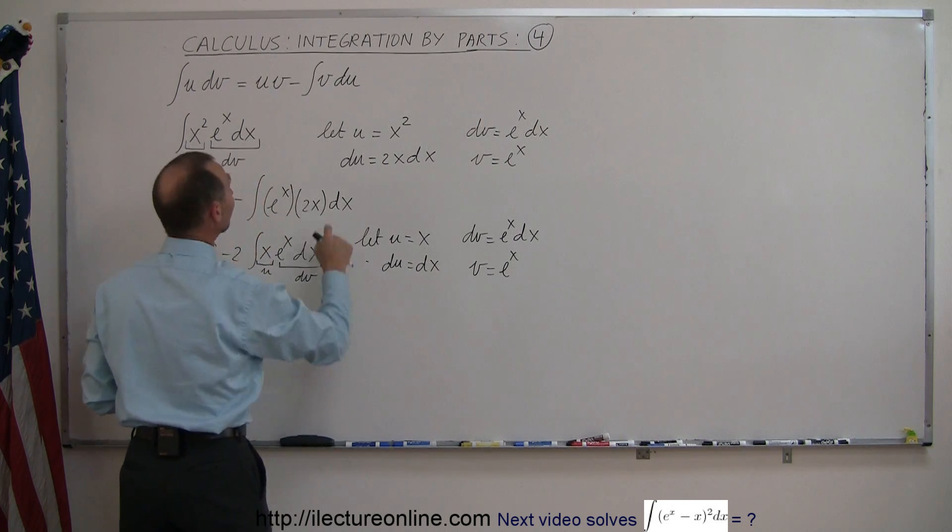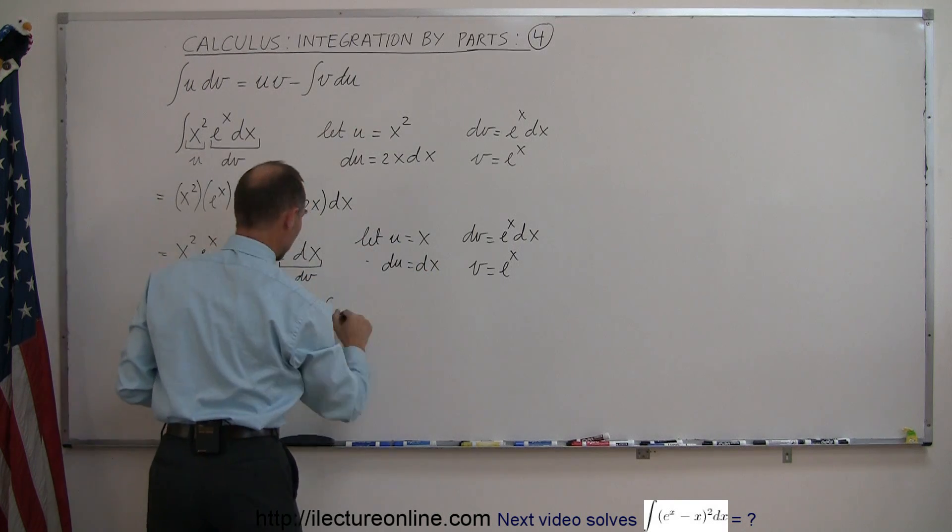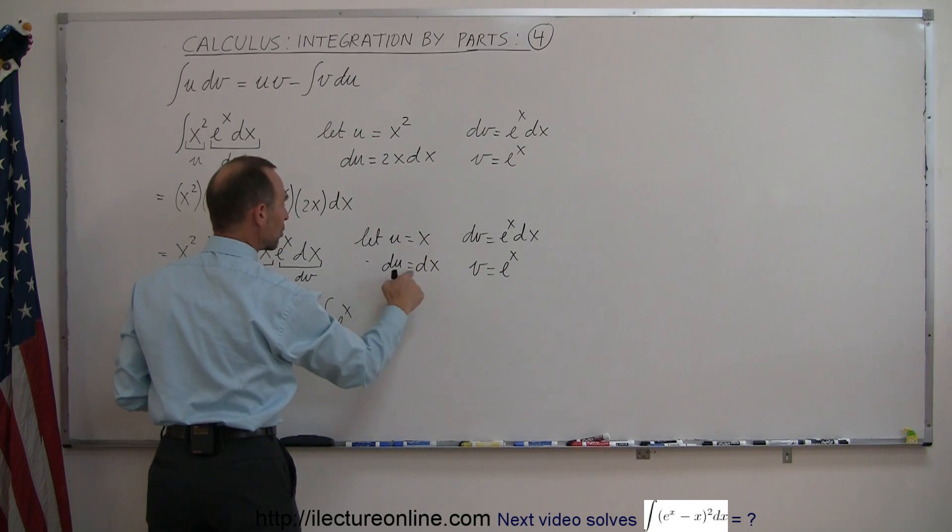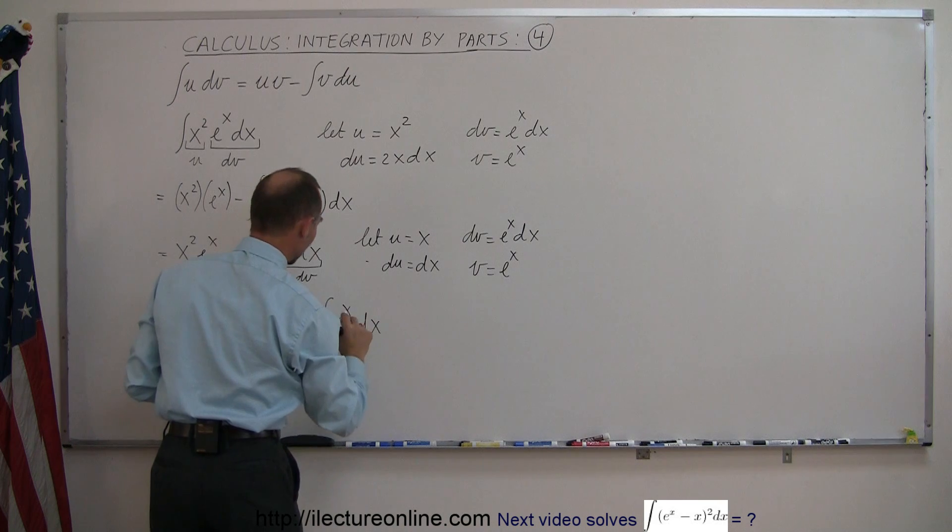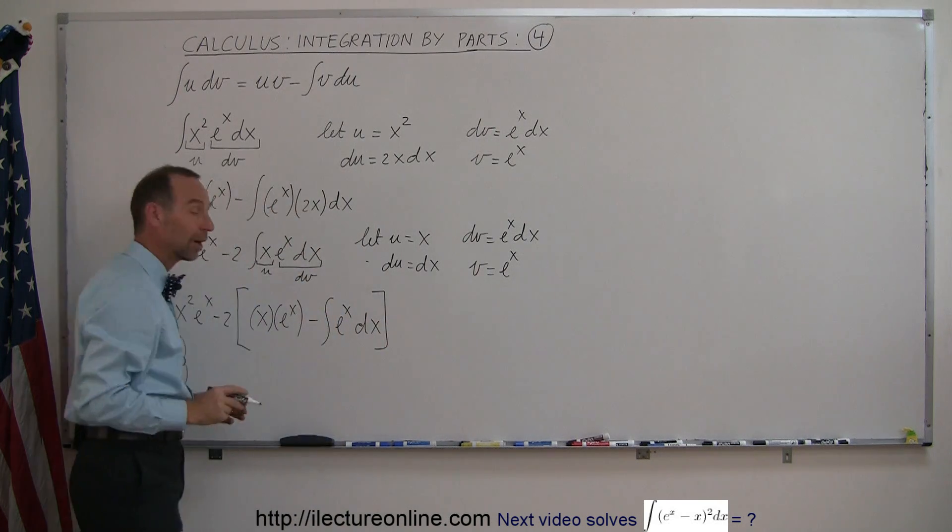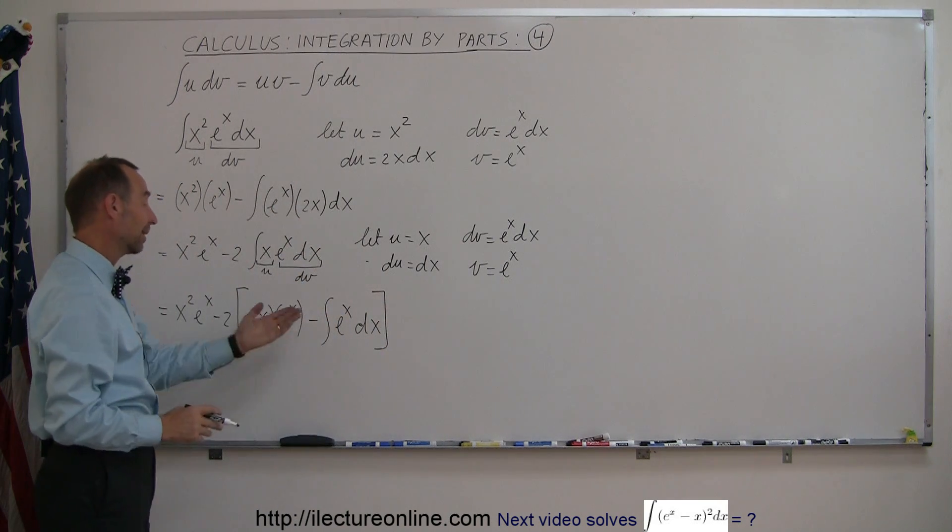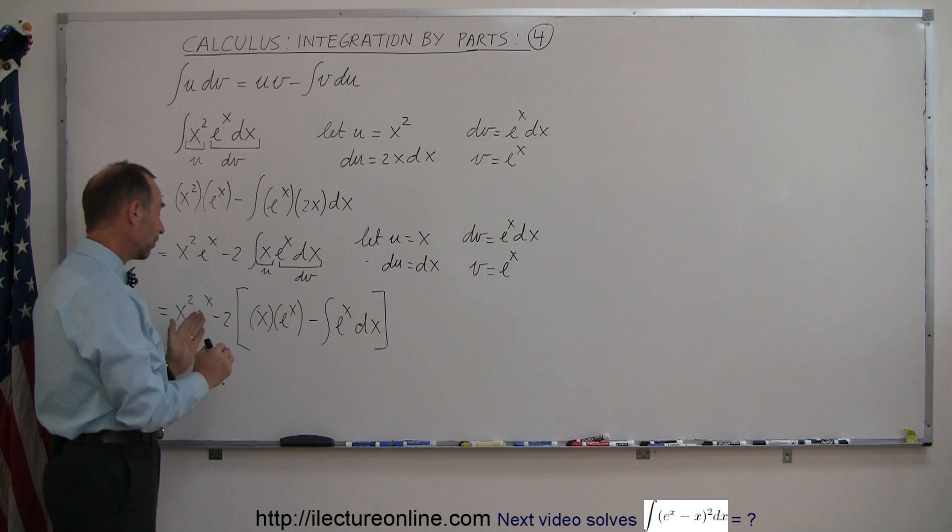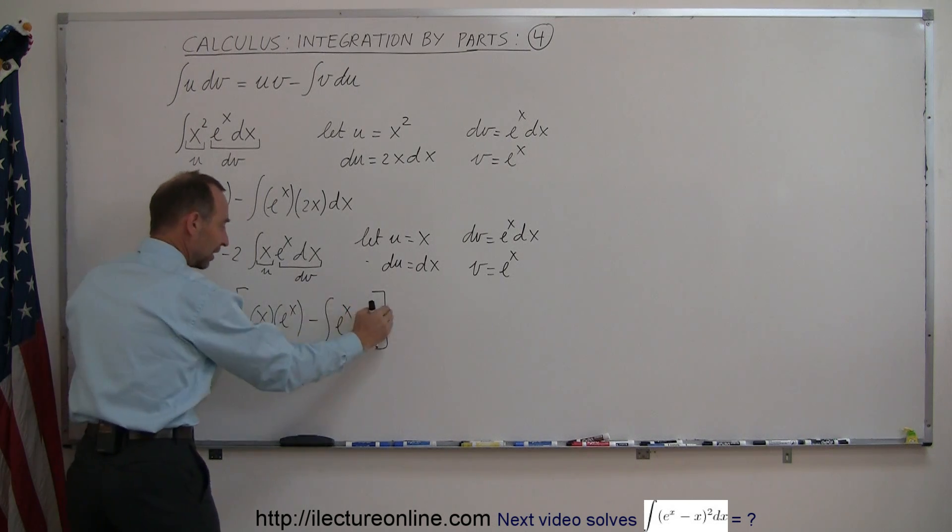Minus the integral of v, which is e to the x, times du, which is dx. And notice the second time we got rid of x altogether. And now we can easily integrate that. Don't forget that this minus 2 applies to everything that's here.